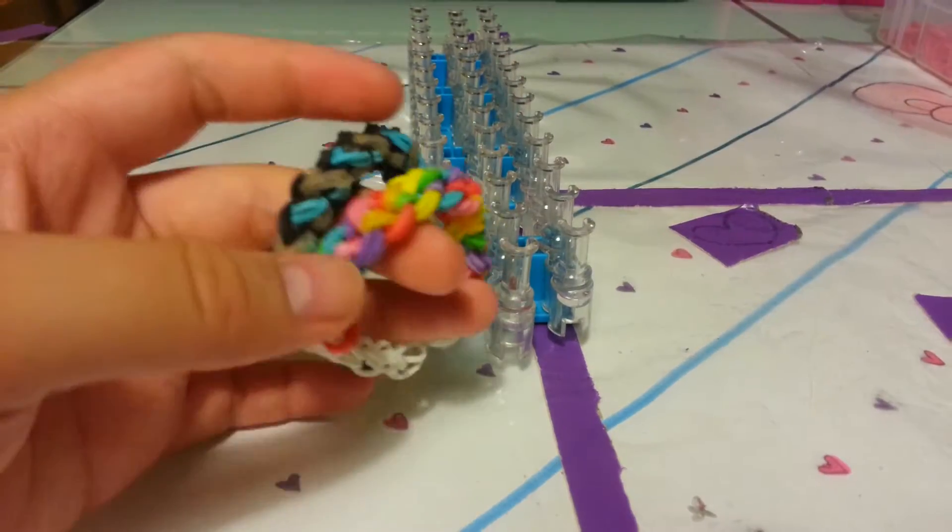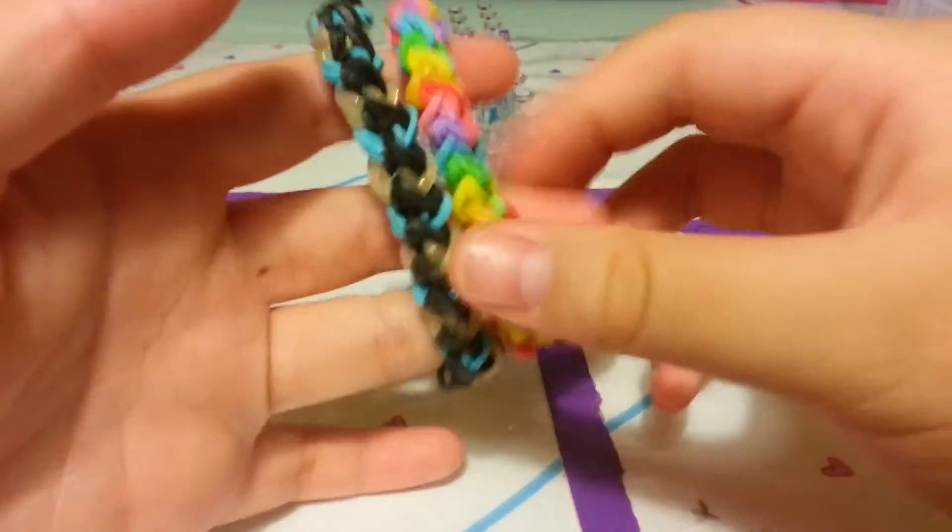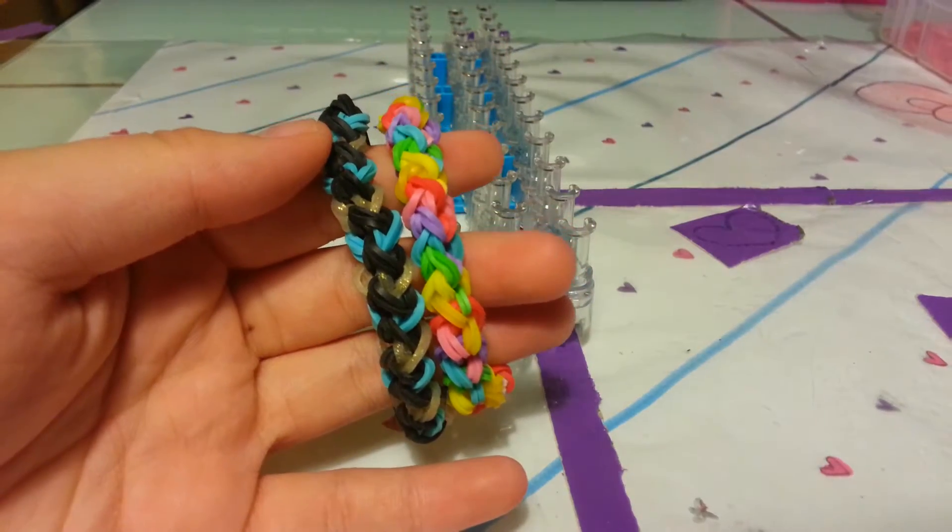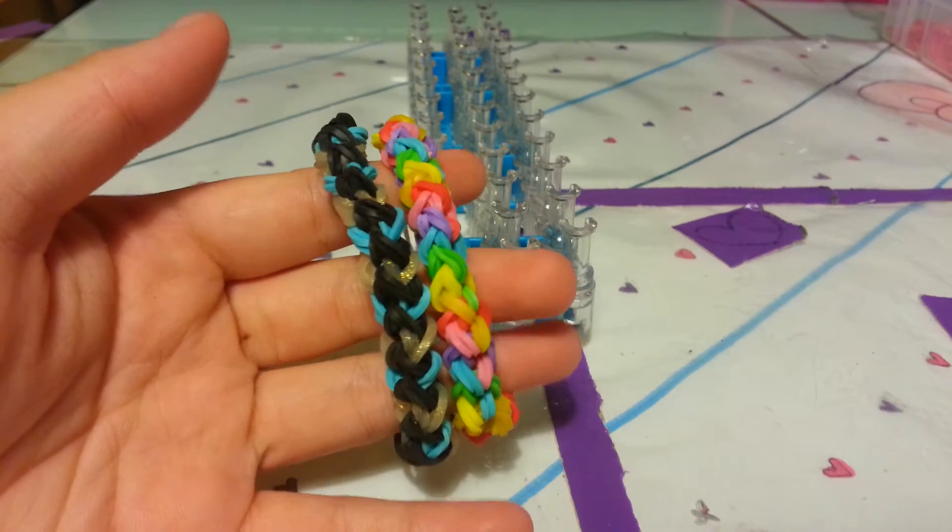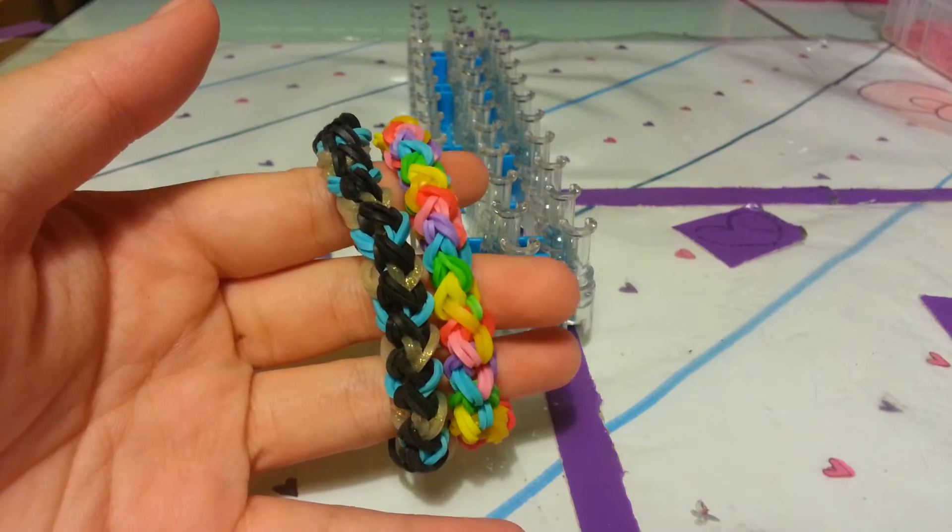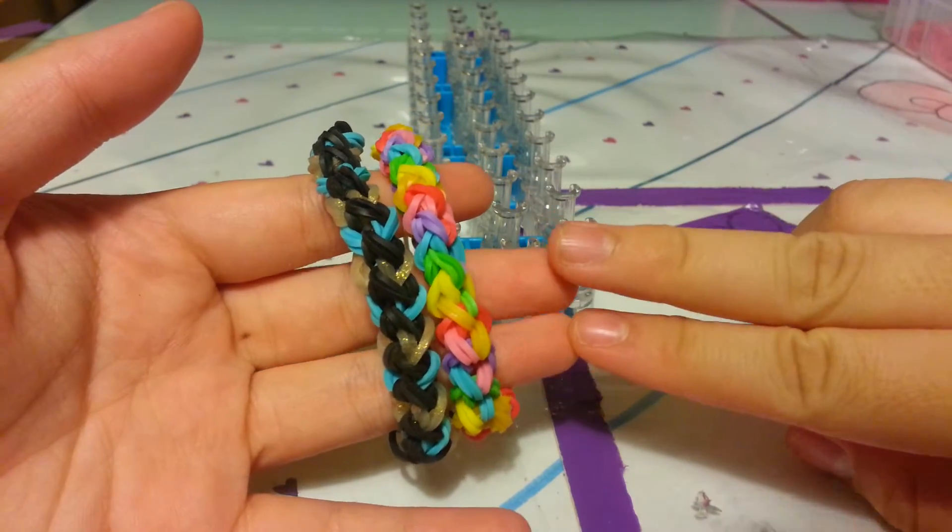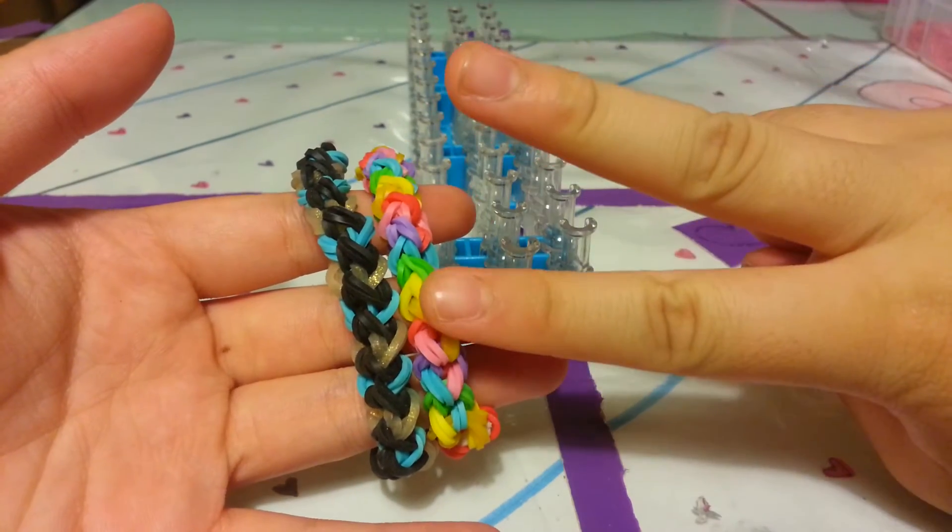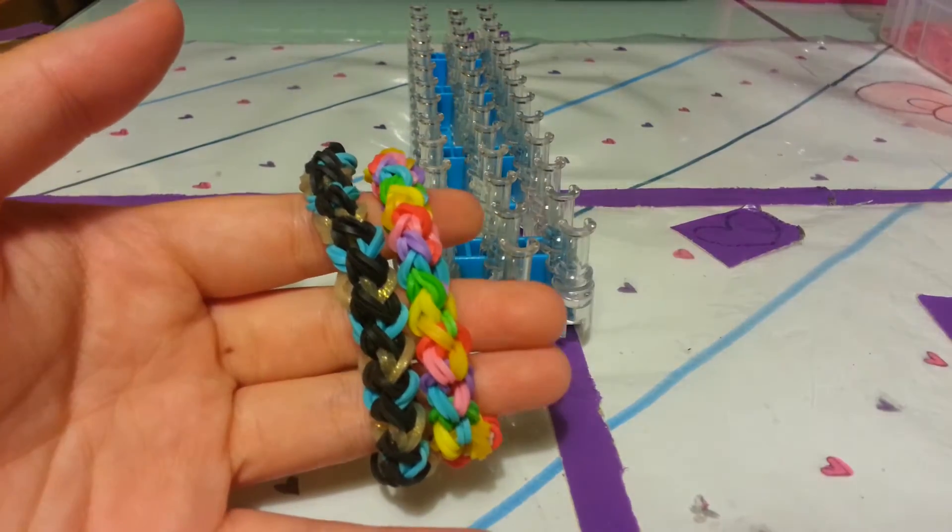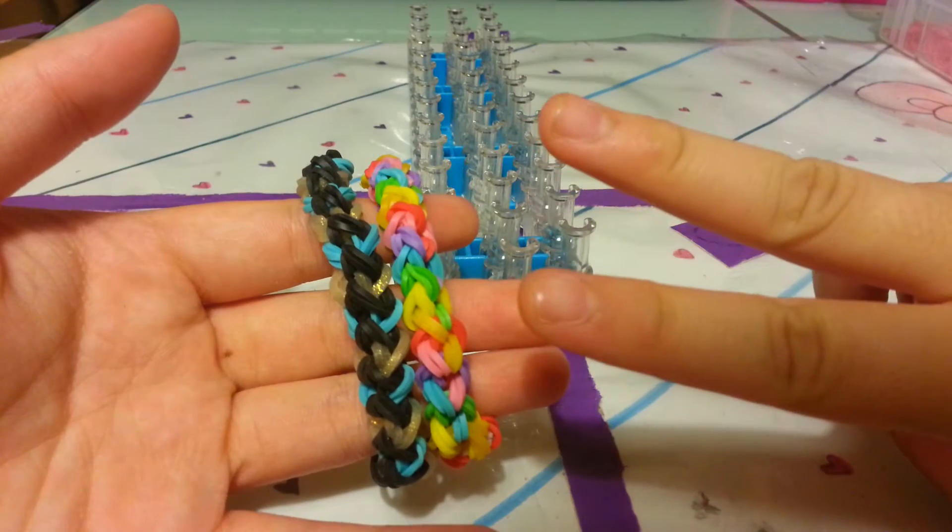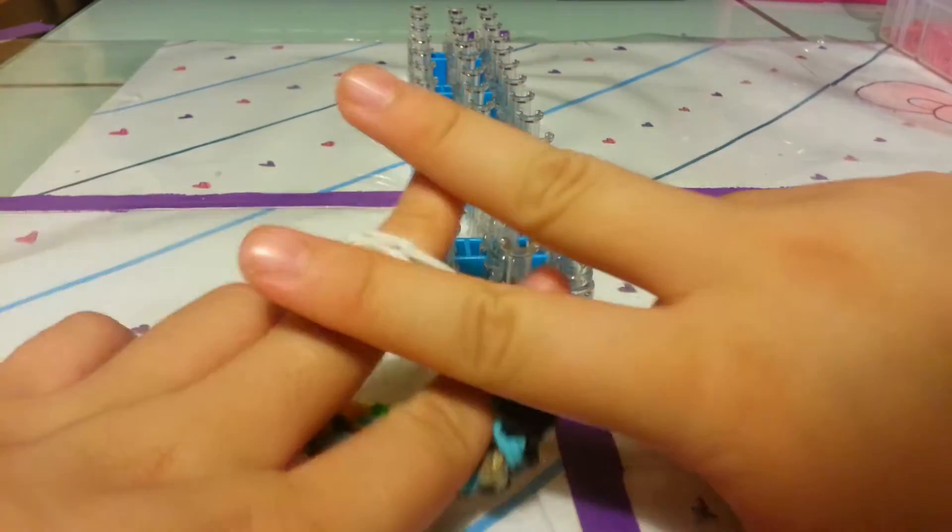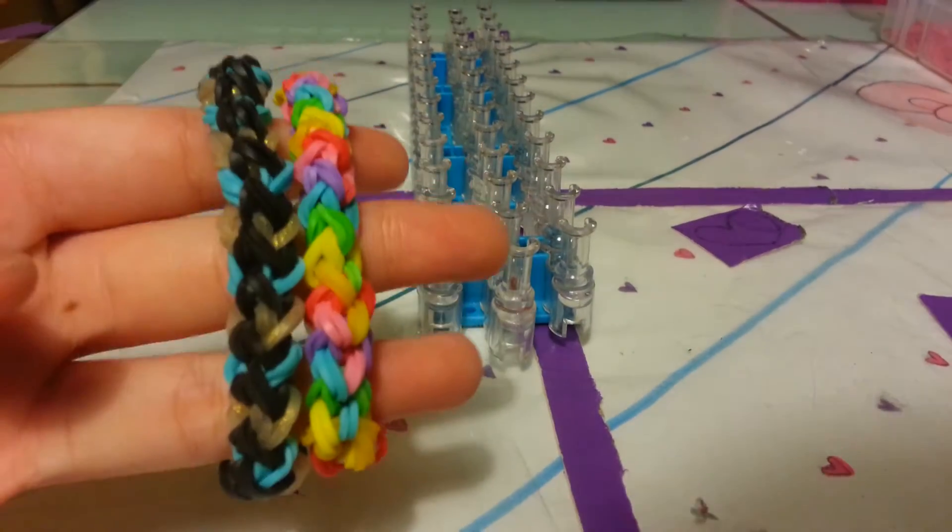Before we start, make sure to subscribe if you haven't already, like this video, and also if you want to follow me on Instagram, they will be down below. I have two accounts, a main account and a Rainbow Loom account, and also use the hashtag asiangirl_bracelets if you want to show me anything.